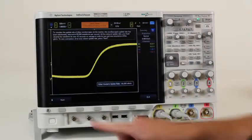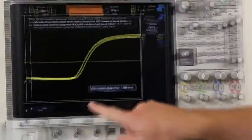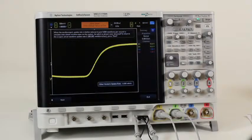Now detuning the scope's update rate further and simulating 3000 waveforms per second update rate, you can see that this glitch has essentially no chance of being captured and displayed and therefore hidden from the customer.